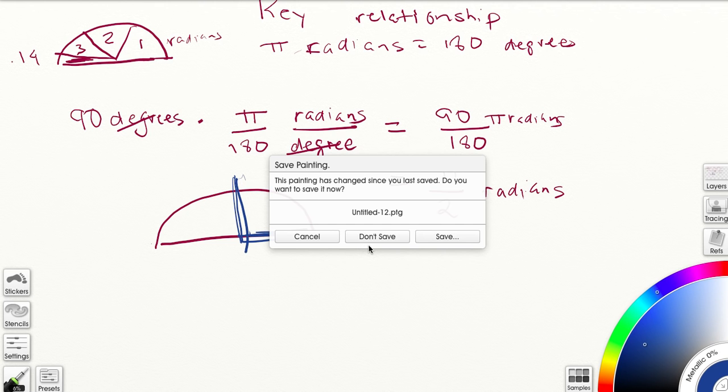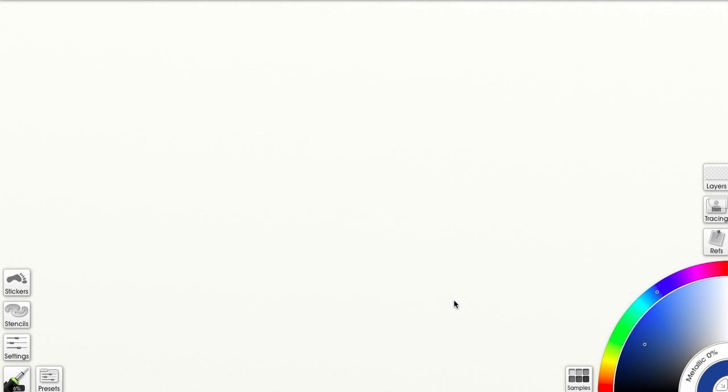Okay, so let's do another one. Let's do radians to degrees this time. So again, key relationship to remember is that pi radians equals to 180 degrees. Just always like to remind myself what it is that we're actually talking about here.